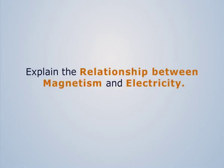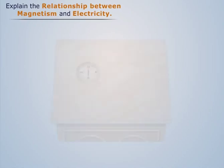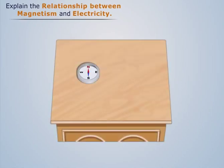Explain the relationship between magnetism and electricity. Consider a simple compass pointing towards the north. Let's place a wire perpendicular to the plane on which the compass is placed.